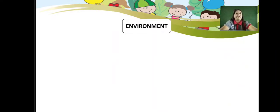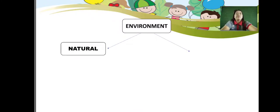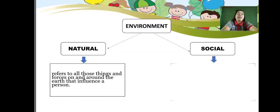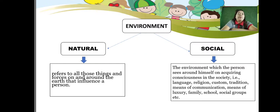There are two types of environment: natural and social environment. Natural environment refers to all those things and forces on and around the earth that influence a person. Social environment is the environment which the person sees around himself when acquiring consciousness in the society — like language, religion, costume, tradition, means of communication, means of luxury, family, school, and social groups.